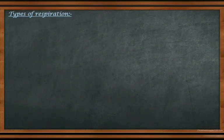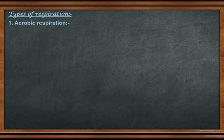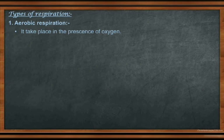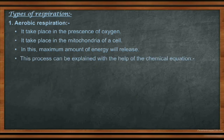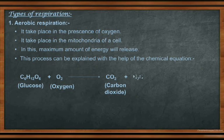Next, types of respiration. There are basically two types. Number one is aerobic respiration — aerobic means in the presence of oxygen. Maximum amount of energy is released: approximately 36 ATP. It occurs under normal conditions and takes place in the mitochondria. The equation shows glucose combined with oxygen breaking down into carbon dioxide, water, and energy — approximately 36 ATP released.